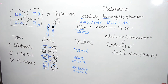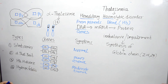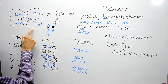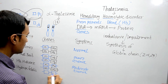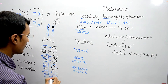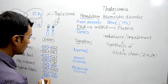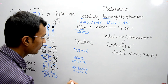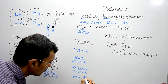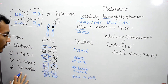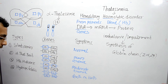The last subtype is Hydrops Fetalis. In this case, all four genes coding for Alpha 1 and Alpha 2 chains are missing, meaning no functional gene is present. Death on birth occurs — the fetus will not survive. That gives us four different subtypes according to the number of missing genes coding for Alpha 1 and Alpha 2 chains of Hemoglobin.